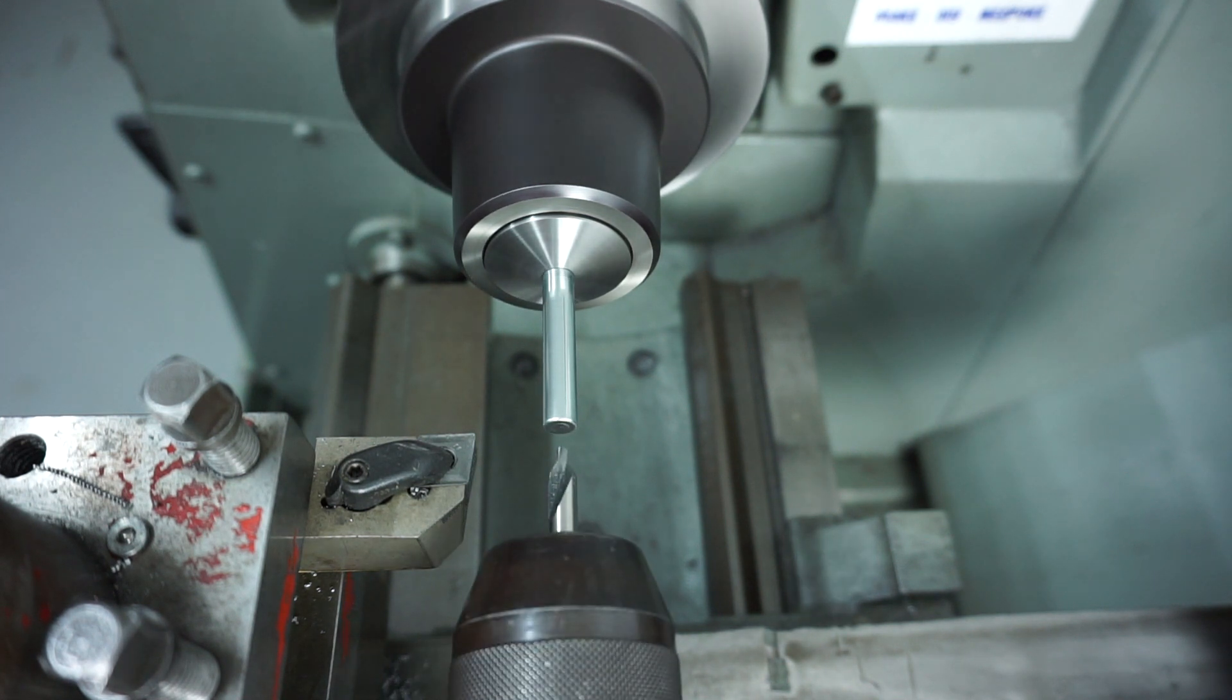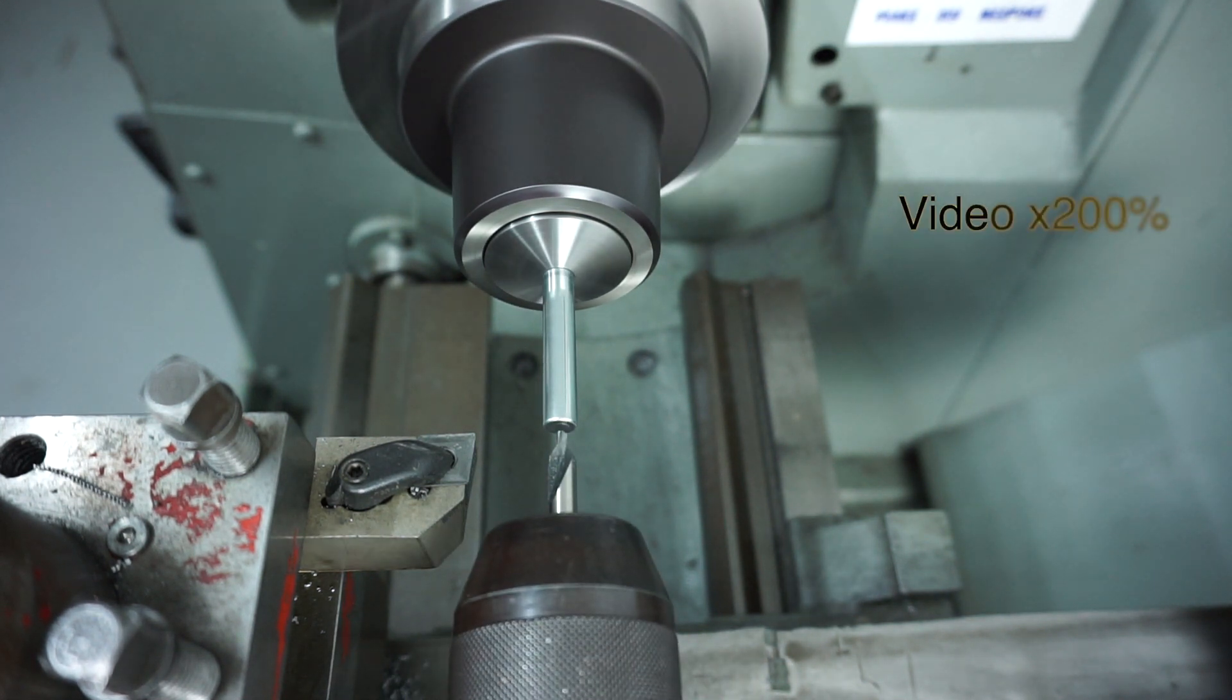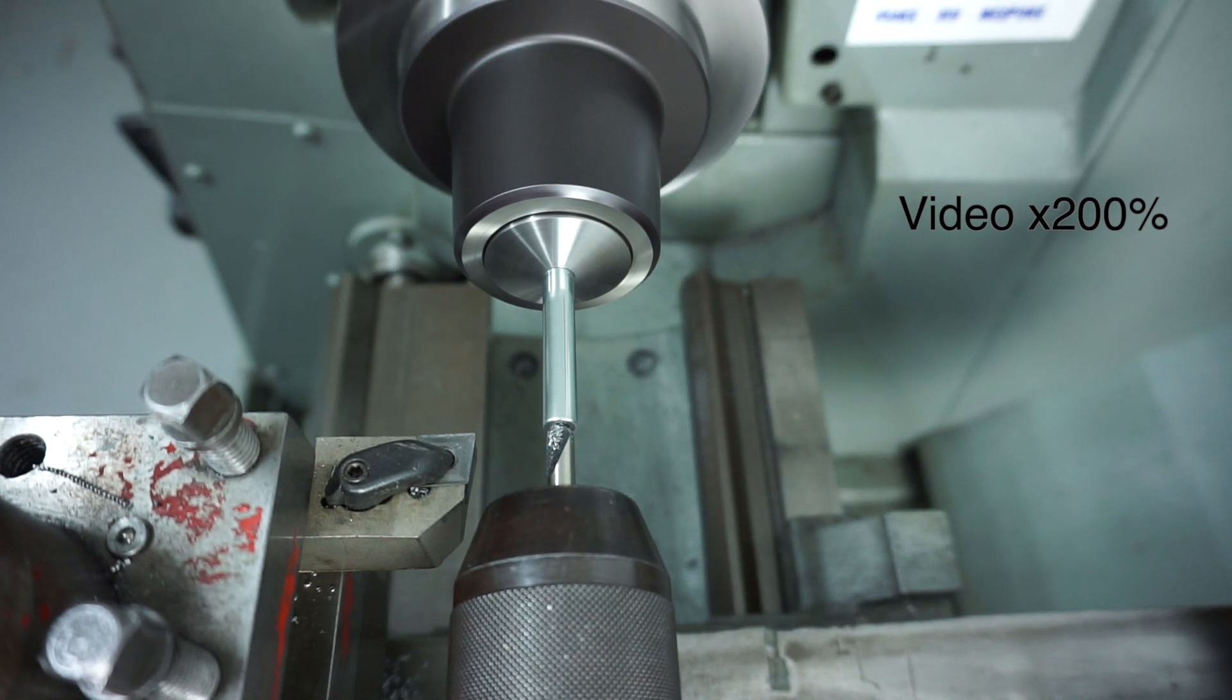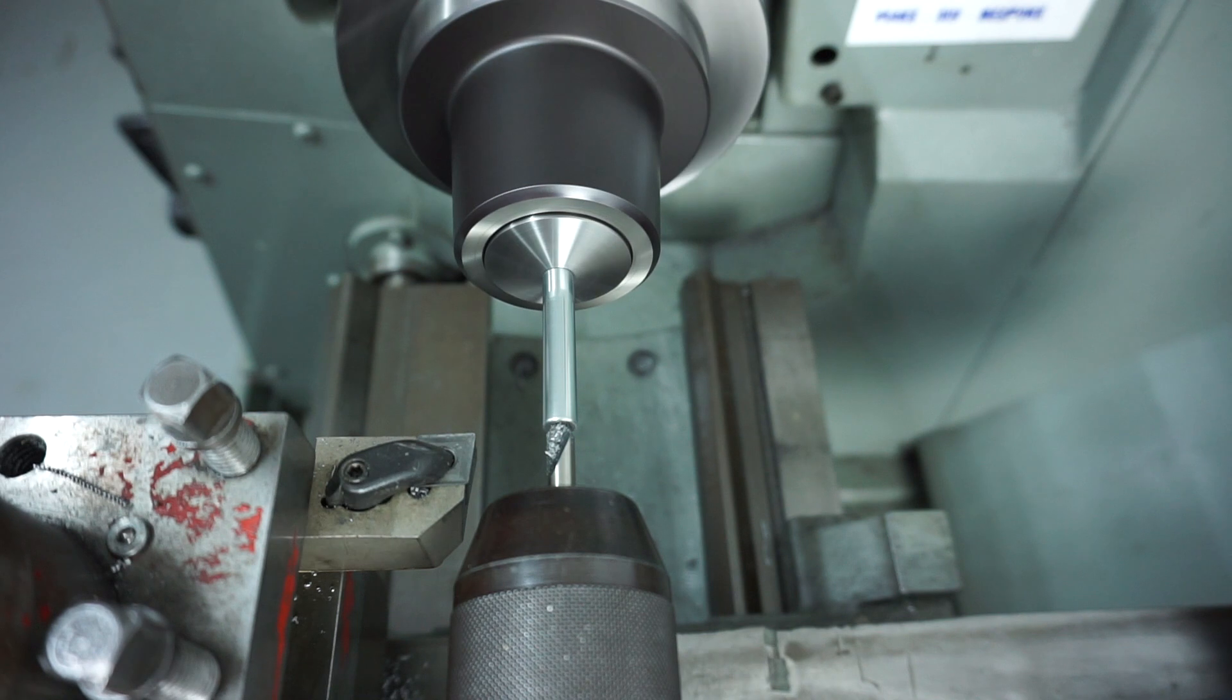The reason I'm doing it this way is because the live center on the tailstock was in the road and when I machined in the middle I had deflection from the part and I ended up with a tapered surface on the top.